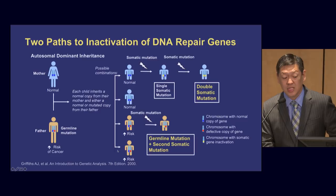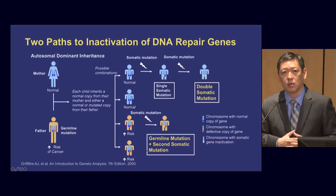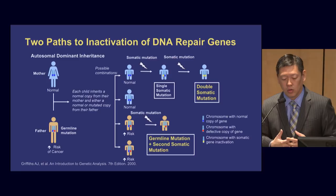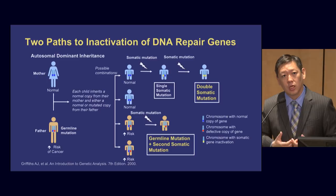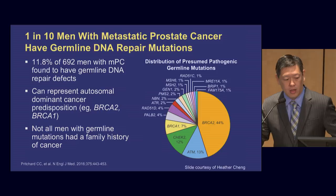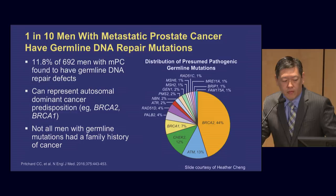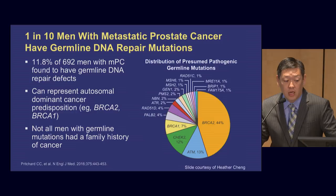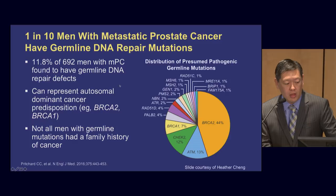The point is that there are mutations that can be inherited and mutations that can be acquired during the course of one's life. For these DNA repair genes, like the BRCA gene, you need two non-functional copies in order to develop cancer. It turns out that about 12% — roughly one out of every 10 men — with metastatic prostate cancer actually have a germline DNA repair mutation. That basically means 10% of metastatic prostate cancer has a possible hereditary component to it, and that's not a small number.